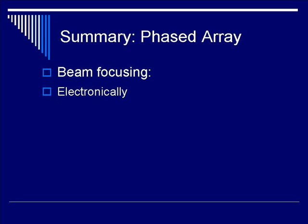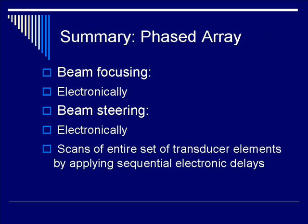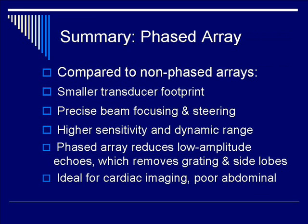In summary, for phased arrays, beam focusing and beam steering are both done electronically. Unlike linear and curvilinear arrays, phased arrays scan the entire set of transducer elements by applying sequential electronic delays. Compared to non-phased arrays, phased arrays have the advantage of a smaller transducer footprint, giving precise beam focusing and steering, as well as higher sensitivity and larger dynamic range. Phased arrays reduce the low-amplitude echoes inherent in ultrasound reflections, which removes grating side lobes from the ultrasound signals. Thus, it is ideal for cardiac imaging, yet is poor for abdominal imaging.